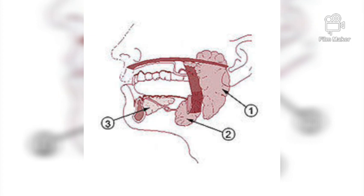These three pairs of salivary glands are situated as follows: the first one is situated below the ear near the cheeks and is the largest gland. The second is middle-sized and located at the lower jaw. The third one is the smallest gland and is situated below the tongue.